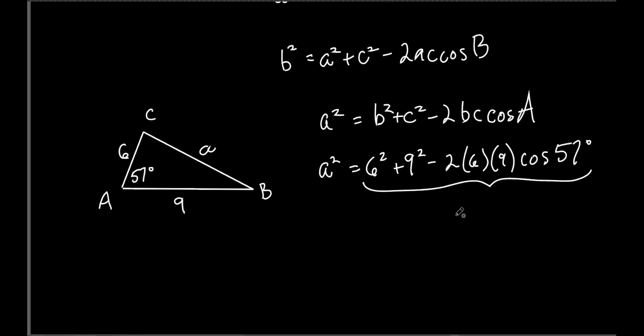What did you get? 58.17? That's not what I got — did you take the square root? That's probably what it was. So what did you get? Approximately 7.6. Very good. That's how you do it.